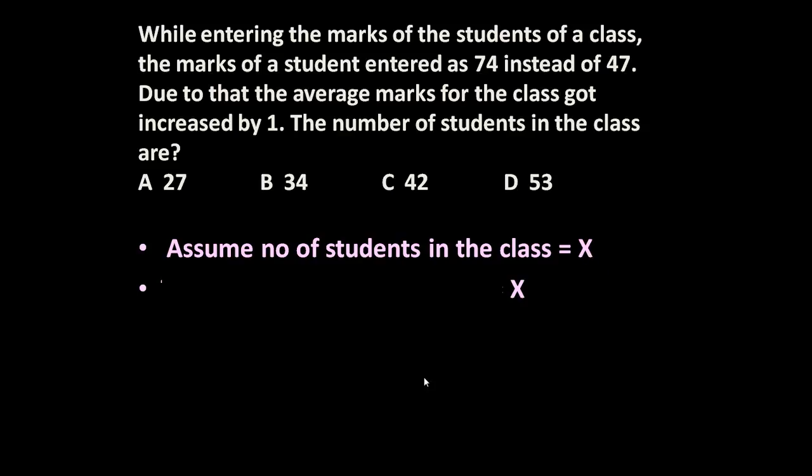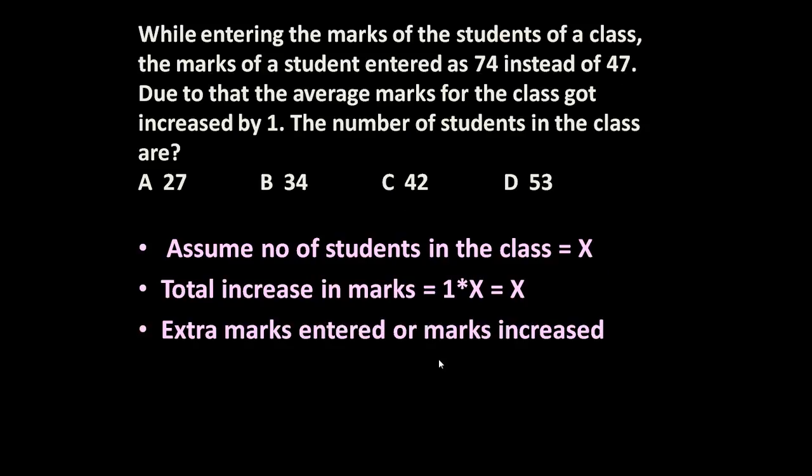Now total increase in marks is, because average has increased by 1, so 1 mark for each student, total number of students are X. So total increase in marks is equal to 1 times X equals X. But if you see, instead of 47 he entered 74. So extra marks entered or marks increased is equal to 74 minus 47 equals 27.